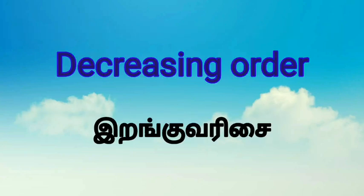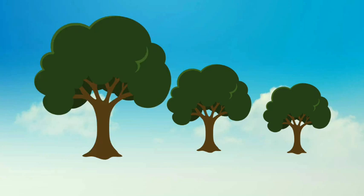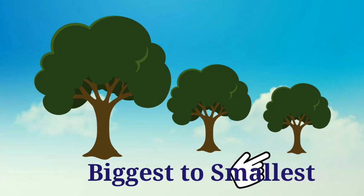Next, see this — decreasing order. The Tamil meaning is Irangarusai. Let's see the image. Dear children, the first tree is the biggest. The next tree is much smaller. Then the next tree is much smaller again. So, biggest to smallest is known as decreasing order. Are you clear, children?